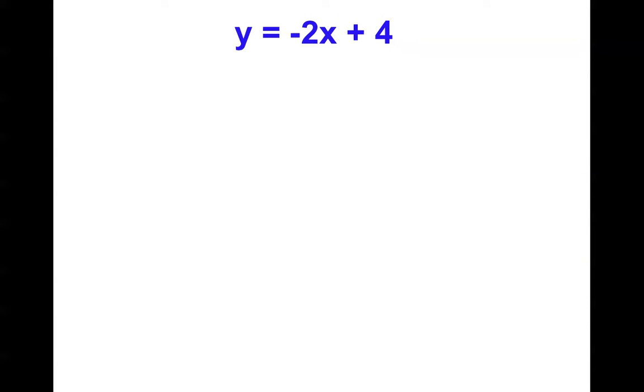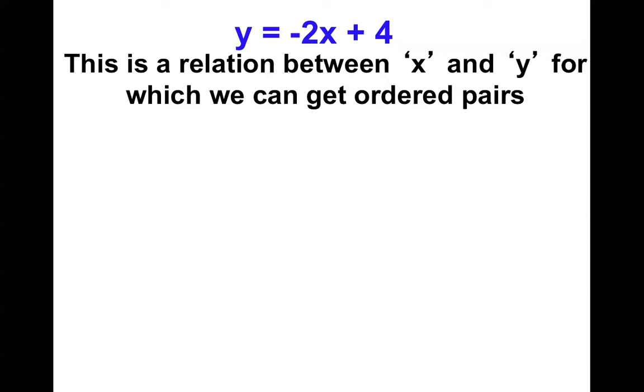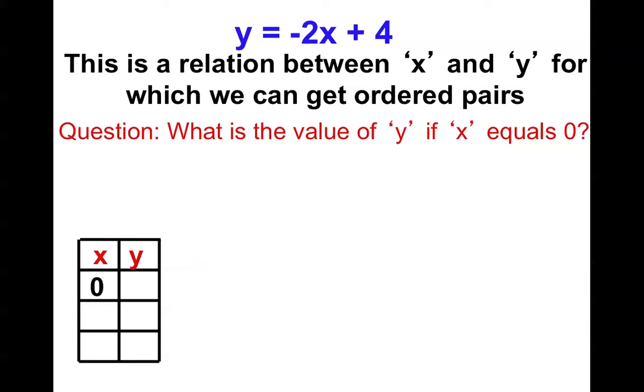So here's a function rule. There's a relationship between the x and the y, and we can get ordered pairs. So we've created tables before, and we pick an x to put into the equation. That's our input. And I also like to think of it as the question I'm going to ask. What is the value of y if x equals 0? That's the question. So if I plug in 0, negative 2 times 0 is 0, plus 4 is 4, answer, 4. There's only one answer. That makes it a function.